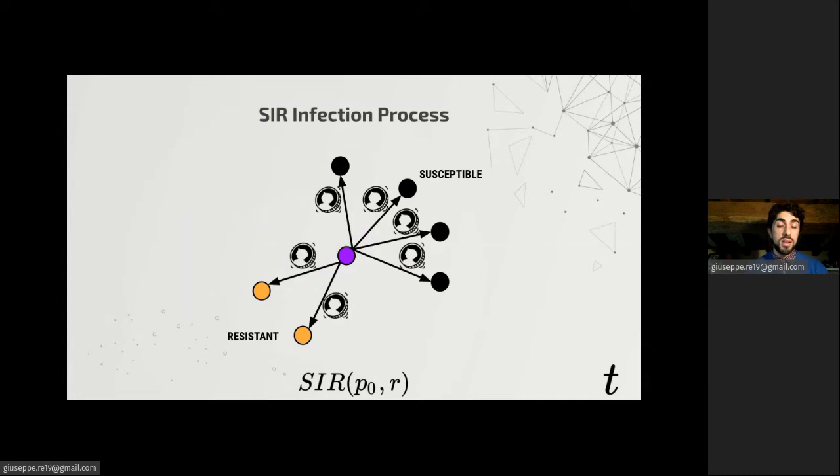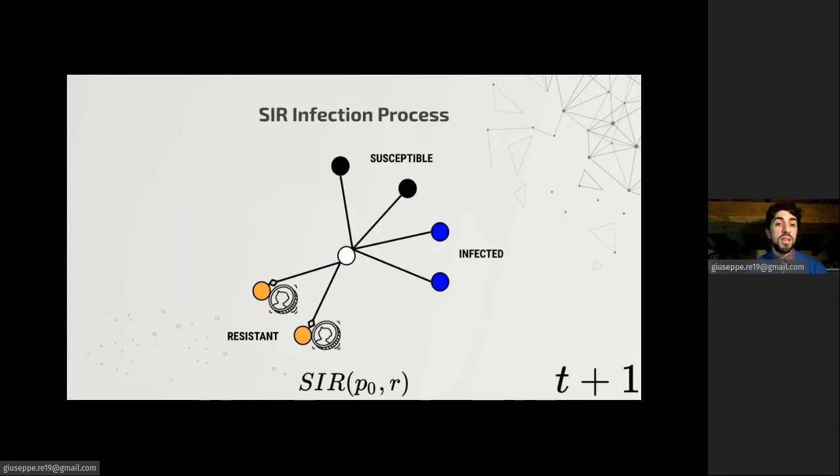Whenever this toss gives a success, then the infection successfully propagates through the edge. This results in the susceptible vertices becoming infected, while the resistant vertices toss another coin that gives head with probability r. And only if also this coin gives head, they become infected for the second time. So they're more resistant to being re-infected.